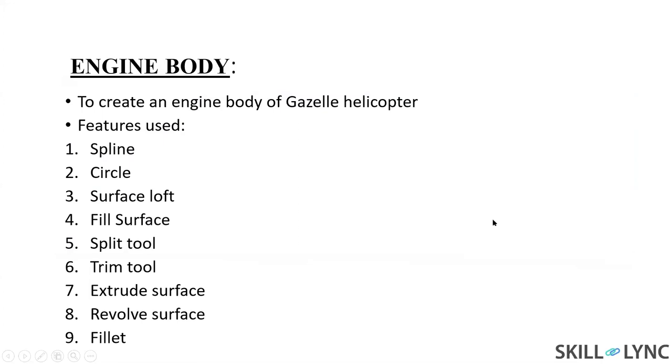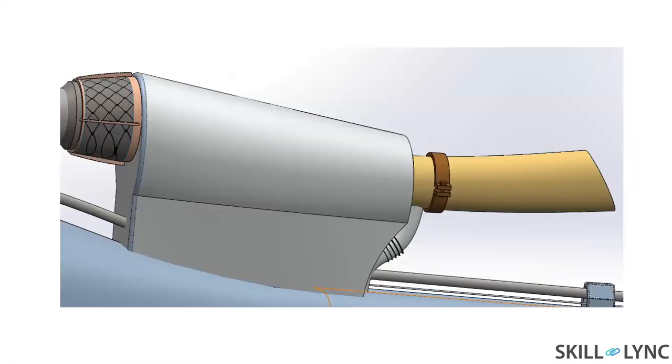Next part is the engine body cover. The features used are splines, surface loft, fill surface, extrude, revolve surface, and fillets. These are the main features I have used in here.